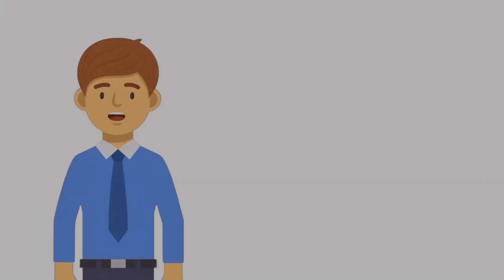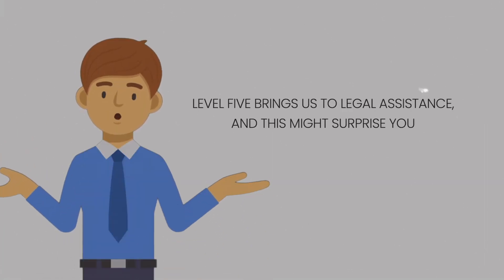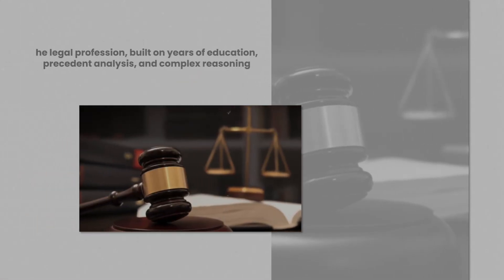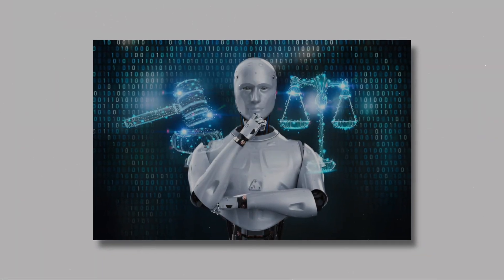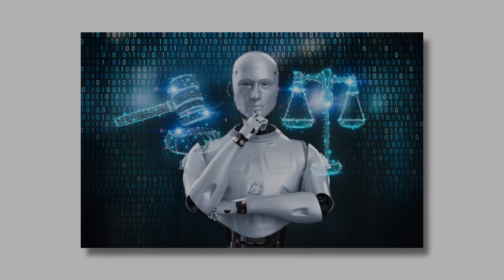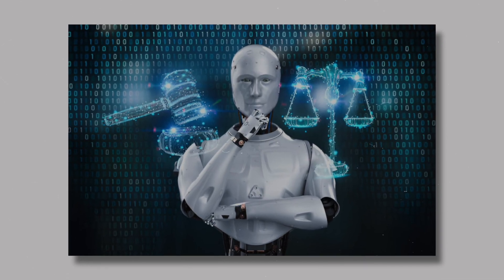Legal assistance. Level five brings us to legal assistance, and this might surprise you. The legal profession, built on years of education, precedent analysis, and complex reasoning, is being disrupted by AI systems that can review contracts, conduct legal research, and even predict case outcomes.